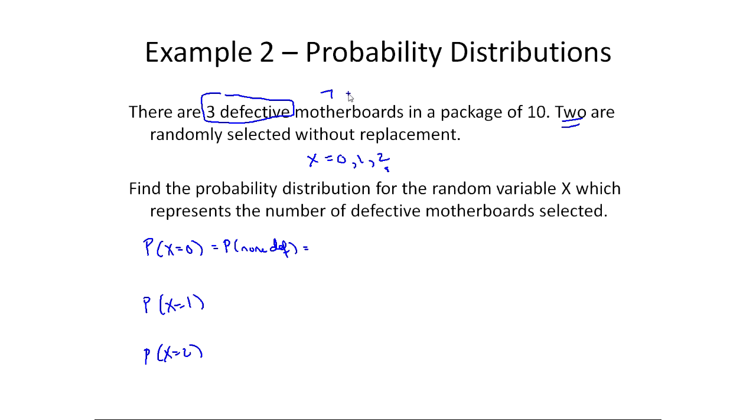And then remember, our multiplication rule says now assume you took the first one, so there'd be nine left. And the probability the second one is also good, in other words not defective, would be six out of nine, so 42 out of 90. We'll worry about any simplification or anything later.